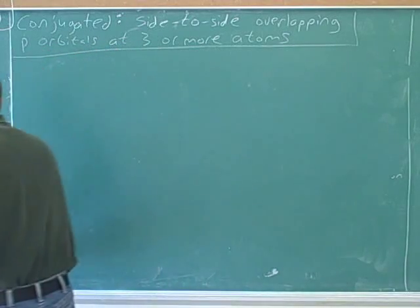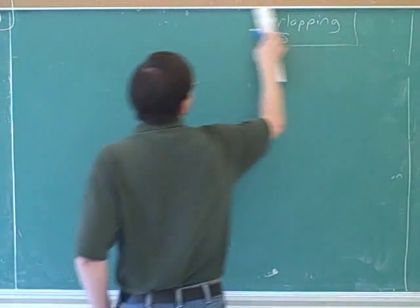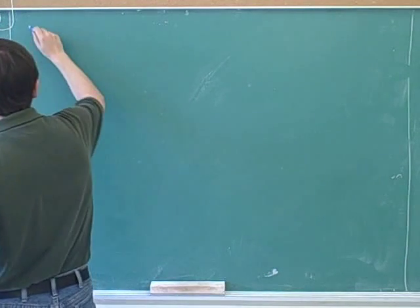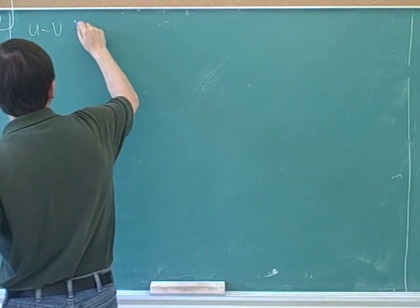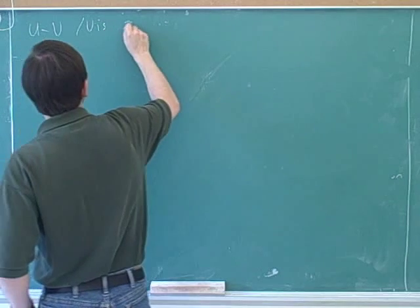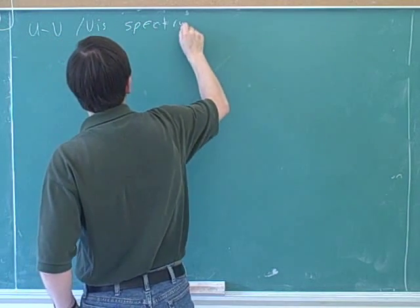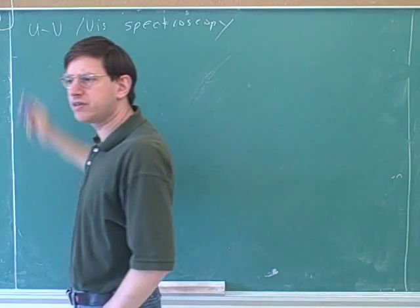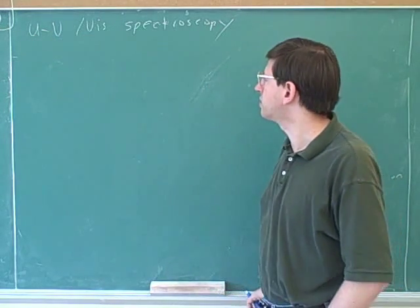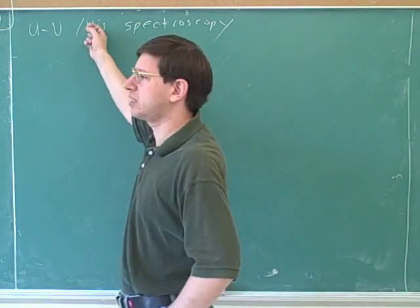Now, what we're talking about now is UV spectroscopy, UV-vis spectroscopy. What does UV stand for? Ultraviolet. Yeah, it stands for ultraviolet. And what does vis stand for? Visible light.